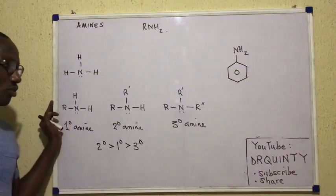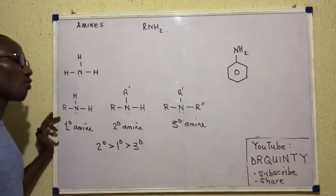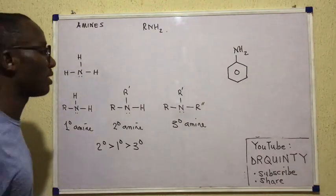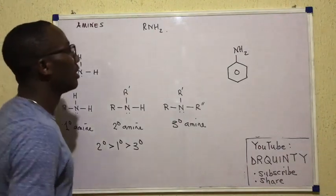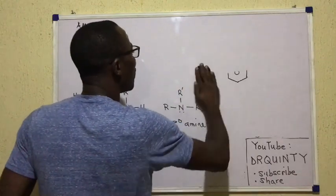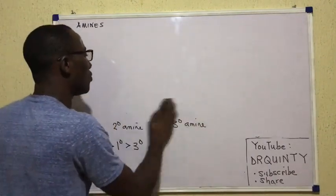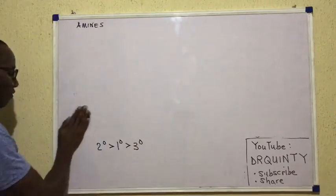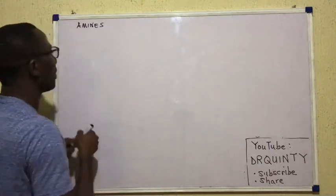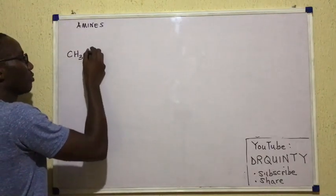Now, leaving how the strengths of amines vary, the next thing we're going to talk about is how amines are named. To name amines, we have the IUPAC method, and then we have the trivial nomenclature. I'll show you these using a few amines. I'm going to draw a few amines now, and those ones I'm going to draw and name. Now see this amine — let's start from something very simple.